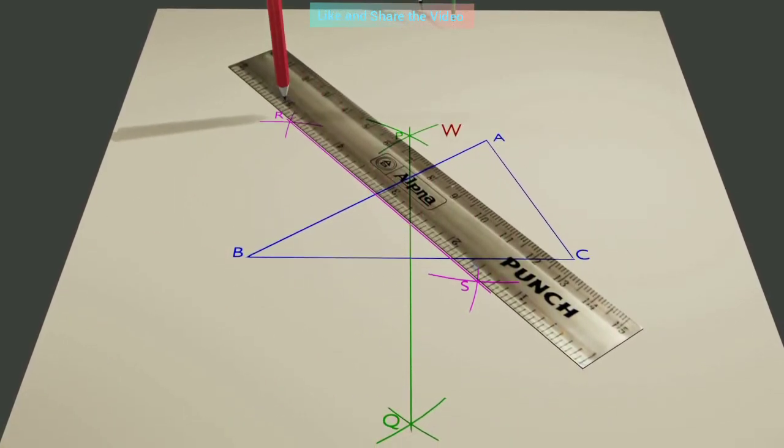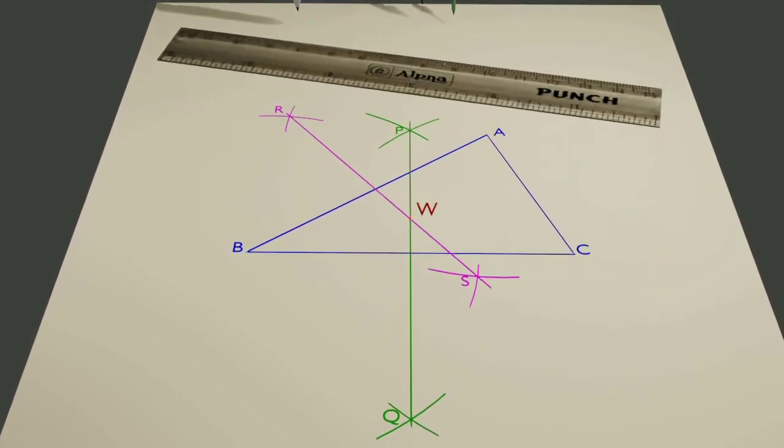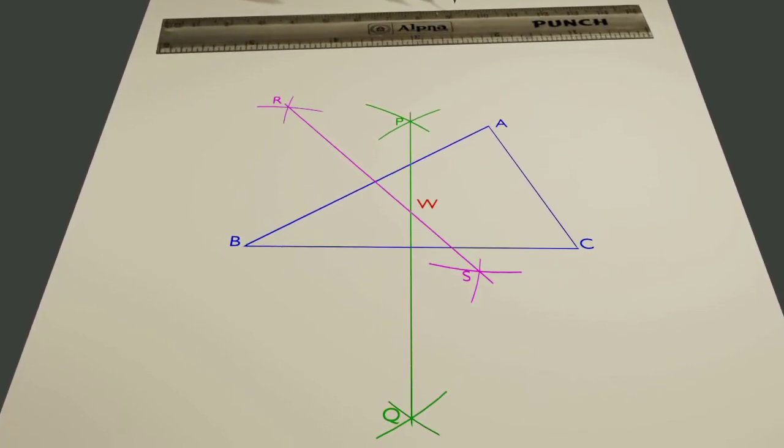These two bisectors intersect each other at point W. So, the circumcenter of this triangle is W.